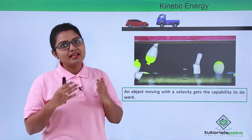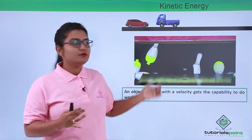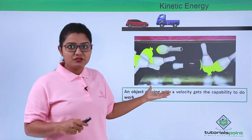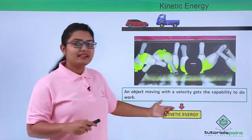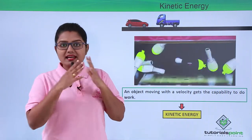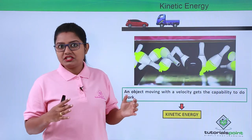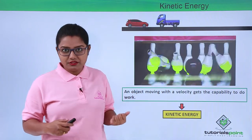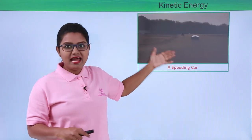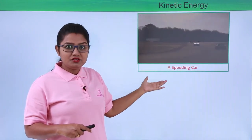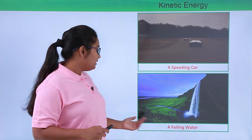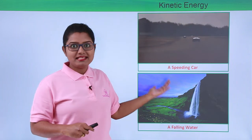A moving object has some energy which it uses to do work, and we named this energy as kinetic energy. So any moving object which is moving with a certain velocity has a kind of energy which we call kinetic energy. For example, a speeding car has a certain kinetic energy, and another example could be falling water, which also has kinetic energy because it is moving.